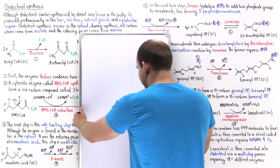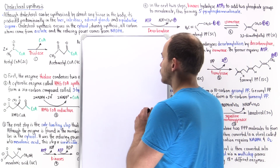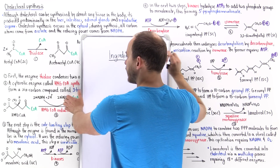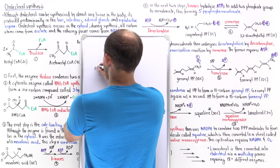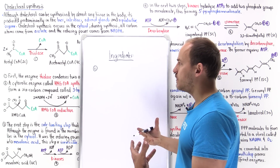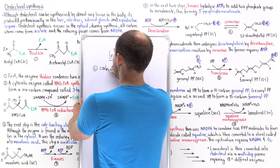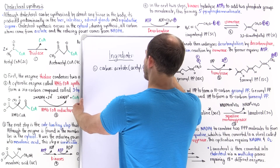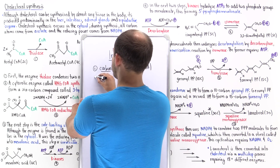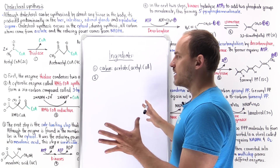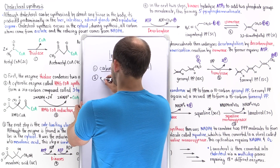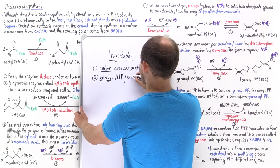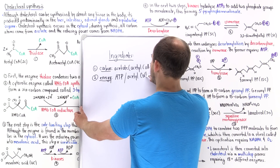Let's begin by talking about the ingredients that are required to actually synthesize cholesterol within the cytosol. Cholesterol is a 27-carbon molecule, so we have to have a carbon source. The carbon atoms basically come from acetate, which is the same thing as acetyl coenzyme A. The energy source for many of these reactions comes from either the hydrolysis of phosphate bonds in ATP, or from the hydrolysis of high-energy thioester bonds in acetyl coenzyme A.